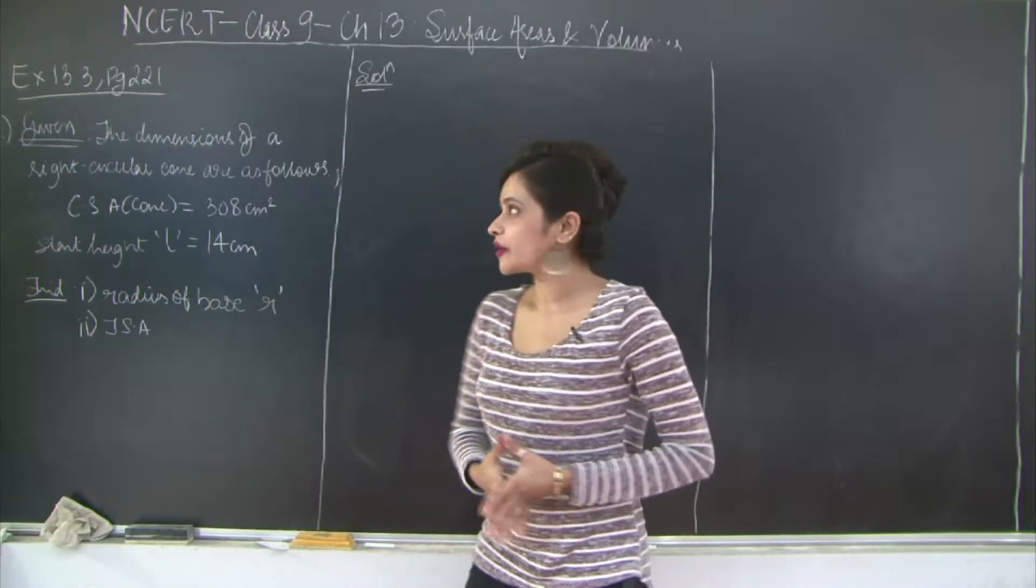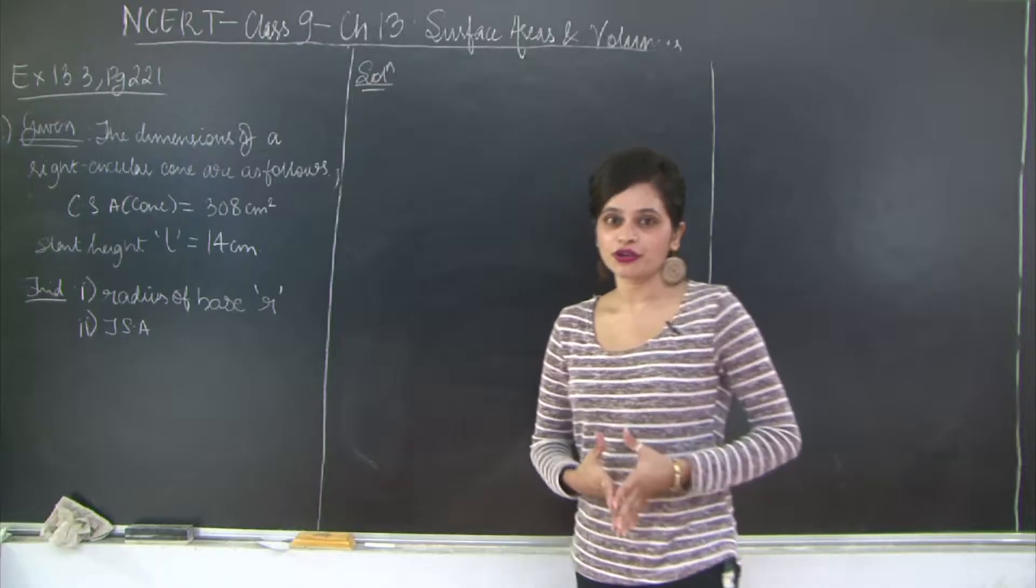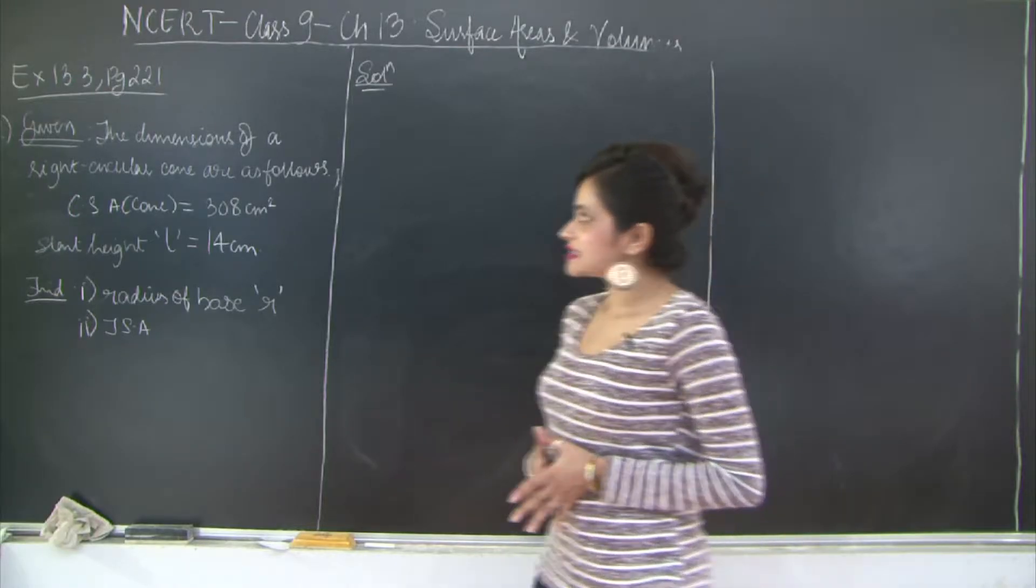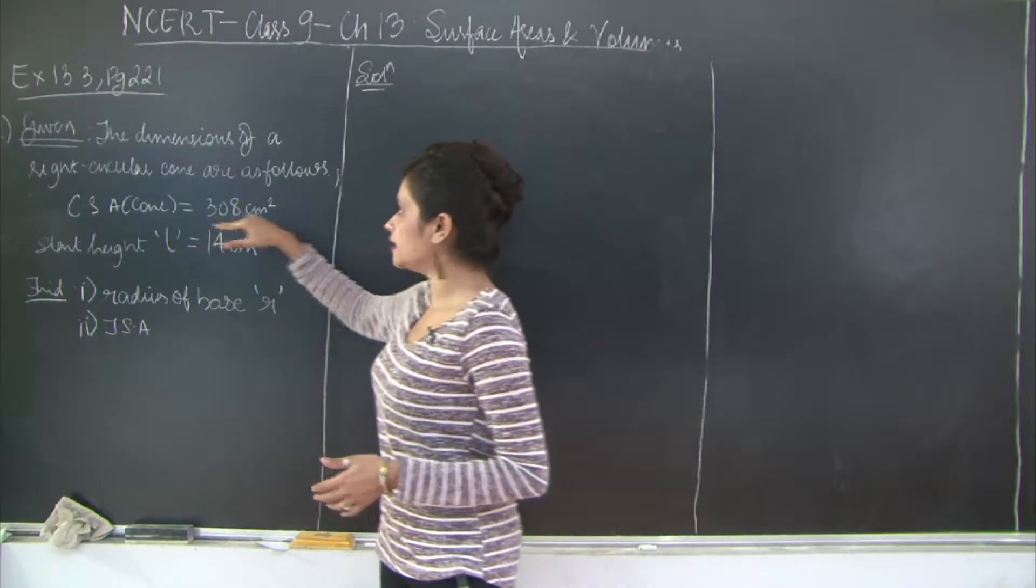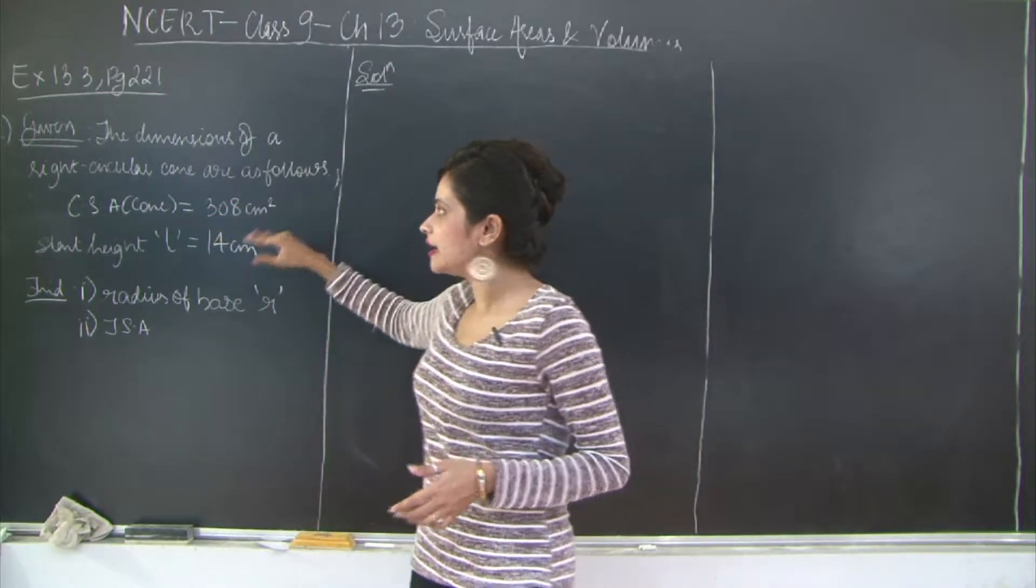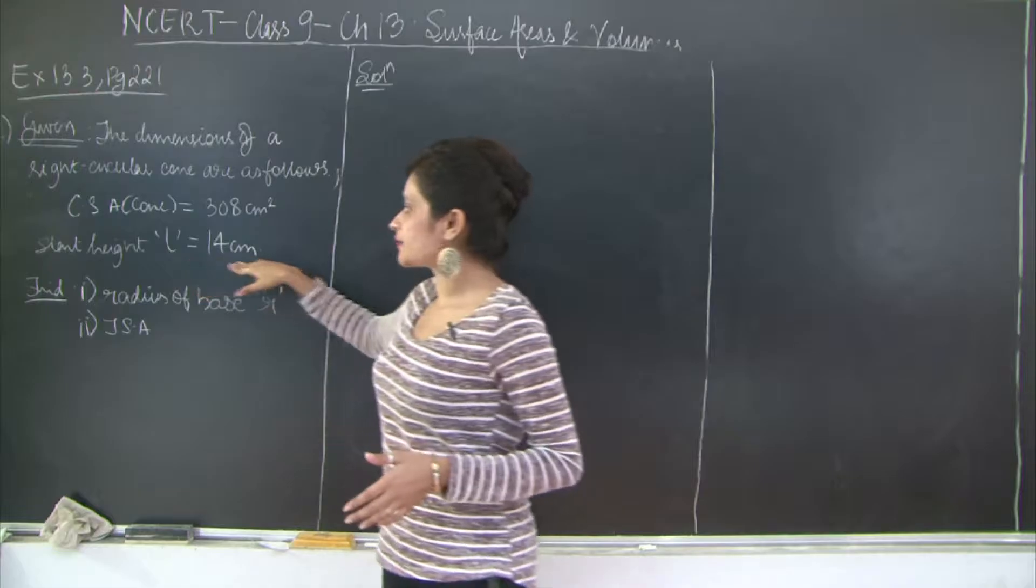Hello students, let us take a look at question number 3 of exercise 13.3 of chapter 13. It says that the dimensions of a right circular cone are as follows.